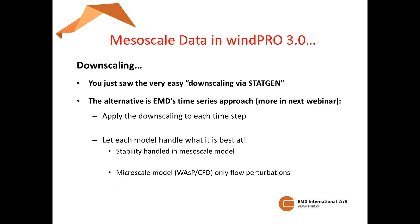There's also another way of doing the downscaling in WinPro 3. We call it the EMD time series approach. There will be much more about how you actually do that in WinPro 3 in the webinar next week. I'm just going to give you a little teaser about the theory behind it. For this time series approach, there are some distinct decisions. First, we apply the downscaling approach to each single time step of the mesoscale data. Another important distinction is that we let each model handle what it is best at — we let the mesoscale model handle the stability, because there's a much more thorough description of stability in the mesoscale model. Then we let the microscale model, which is WASP or WASP CFD, handle only the flow perturbations — the effects of terrain speedups and roughness changes — and not include any of the stability perturbations from WASP.